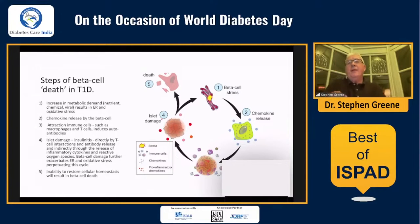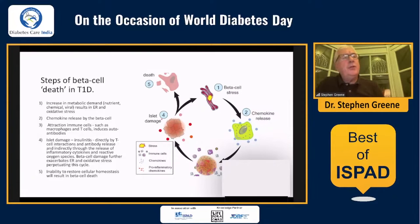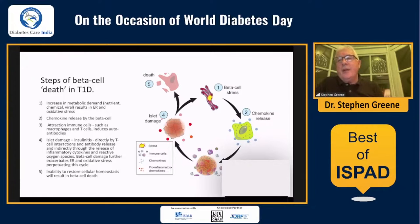What does this mean? It raised the issue of the whole business of beta cell stress, which is number one in this diagram. One thing the ISPAD meeting really opened up to my eyes is that the beta cell in the pancreas is one of the most metabolically active cells in the body. Any stress on that cell, any damage to the mechanisms within that cell, is reflected in poor function.